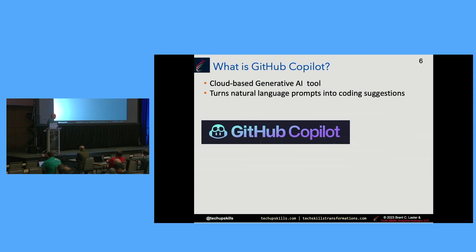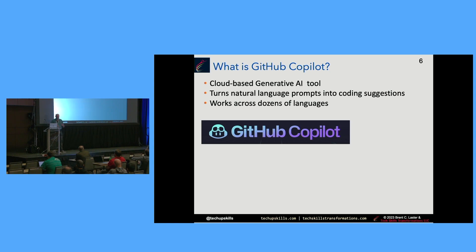It turns natural language prompts into coding suggestions. GitHub Copilot is all about the coding domain — it's specifically trained for that. It works across dozens of programming languages, all the ones you'd see in public repositories: Go, Java, TypeScript, and any others out there. It's going to have better suggestions for languages that have a larger representation in the public code base — the more popular languages that it's been trained on.